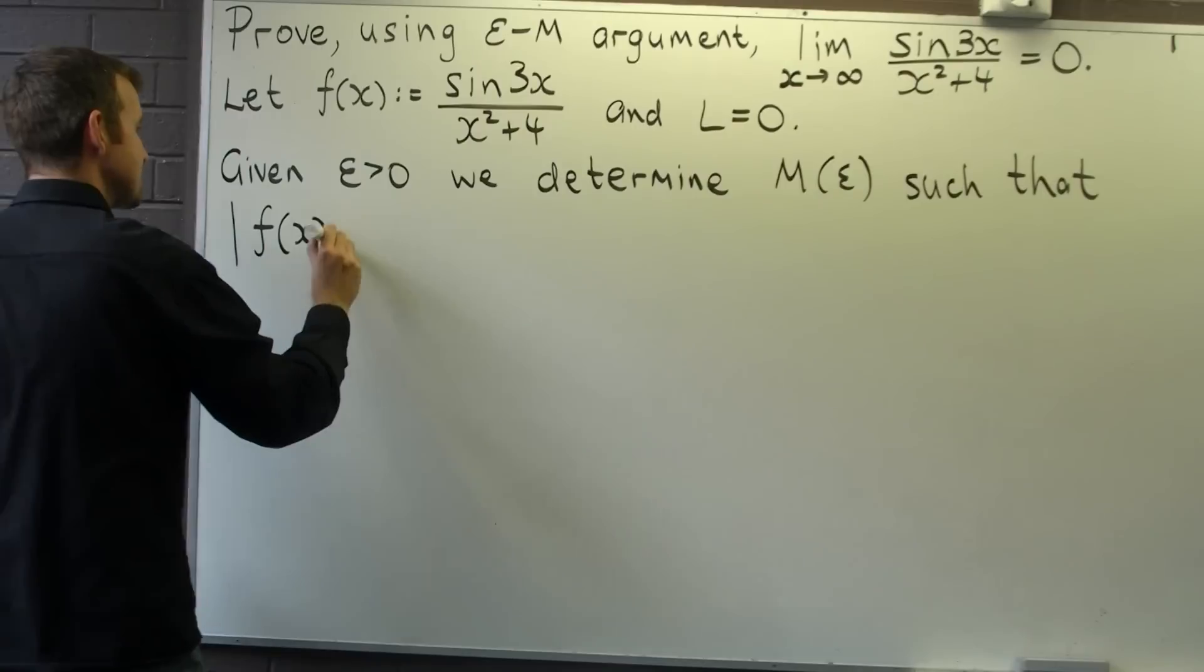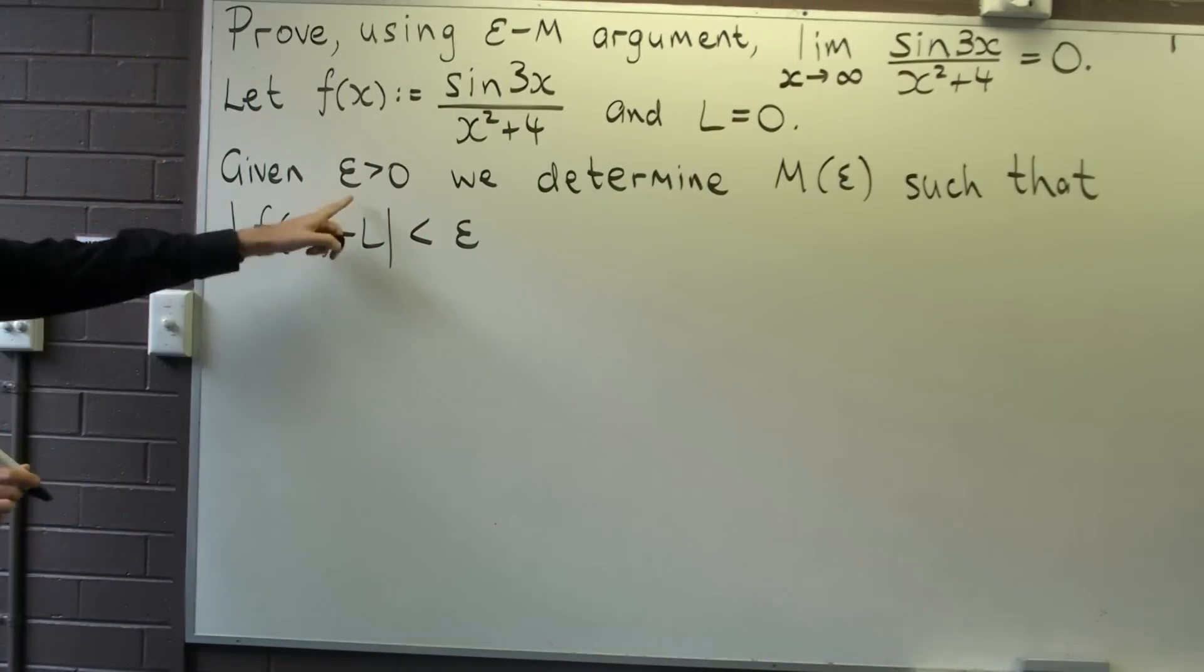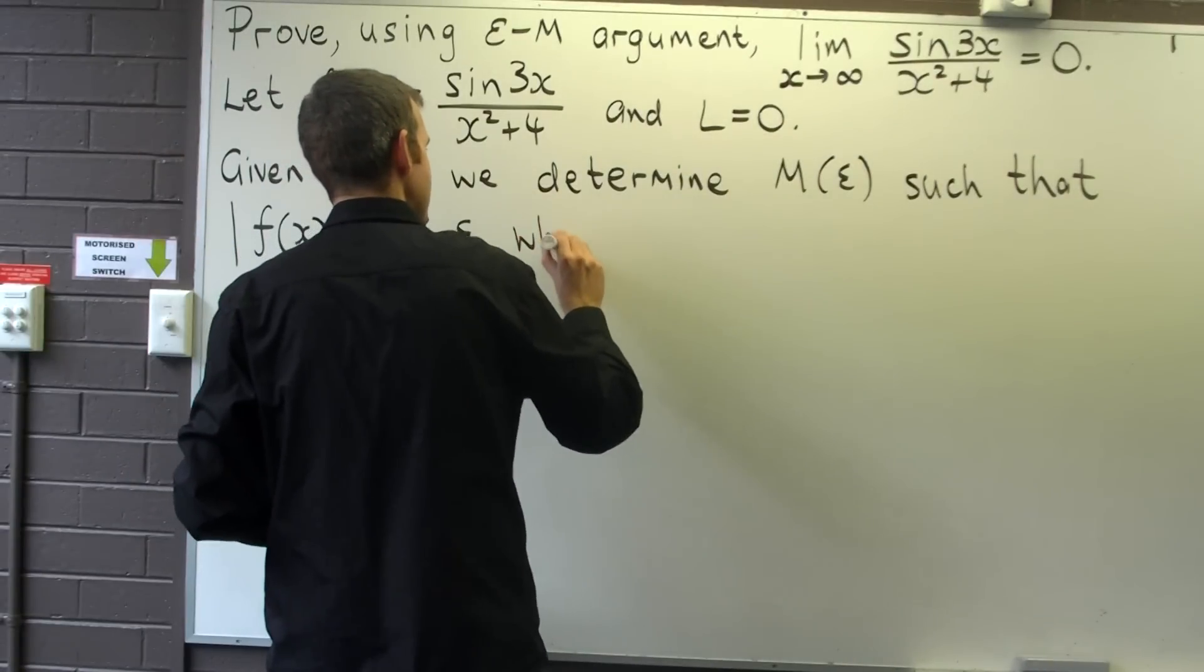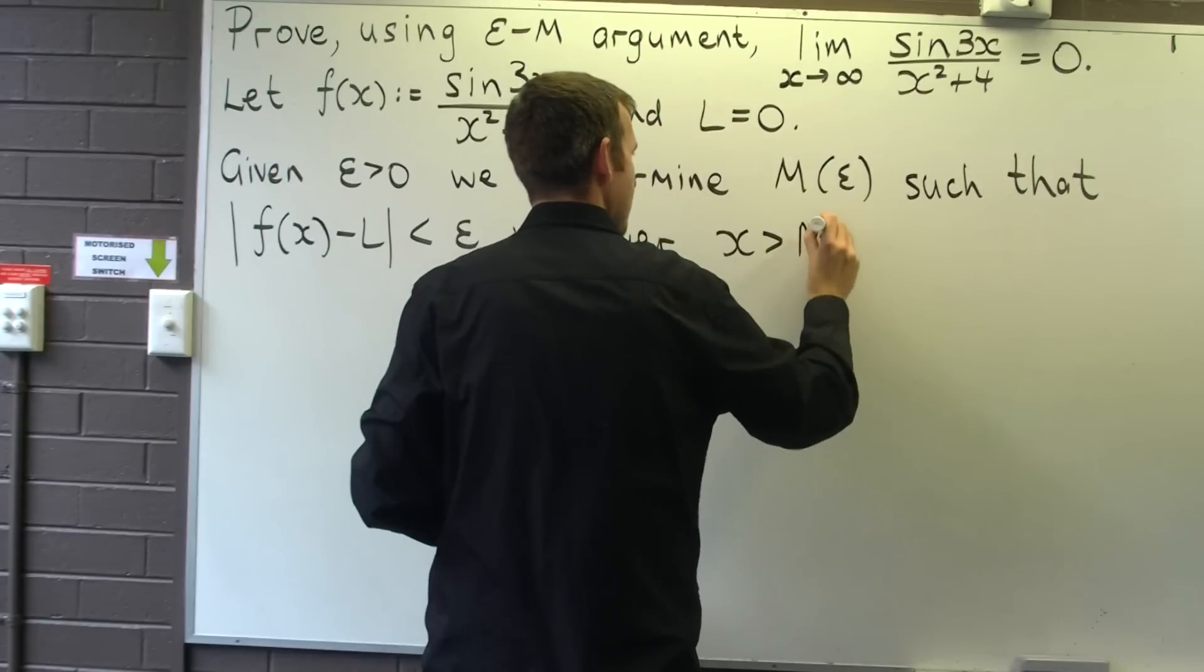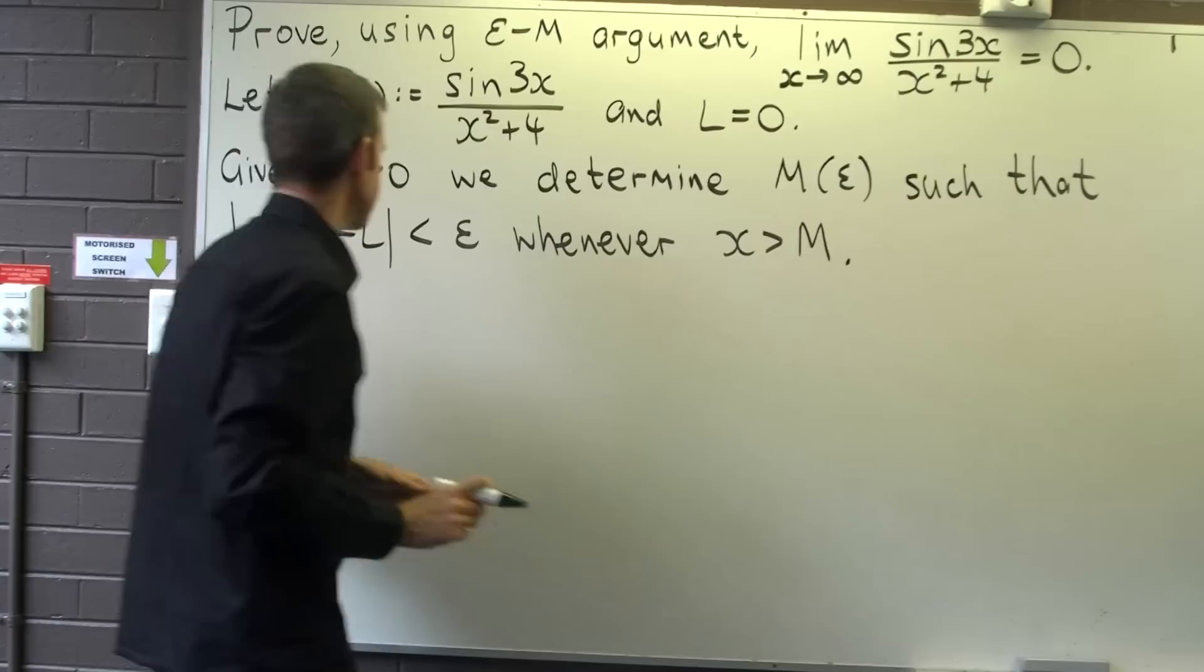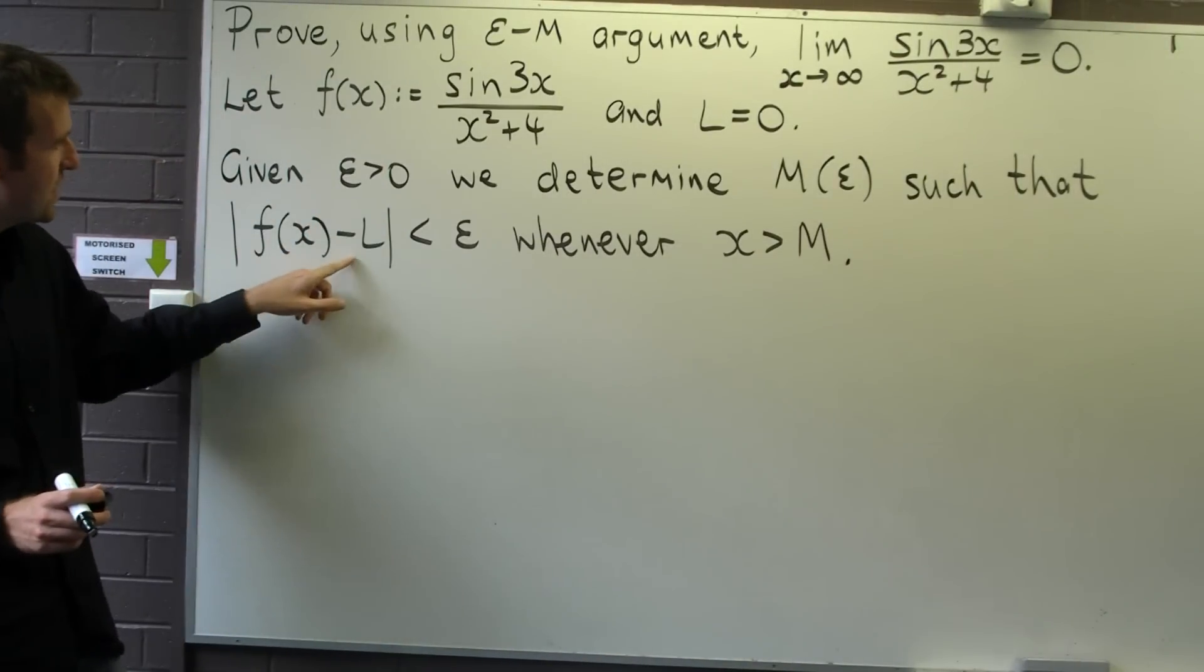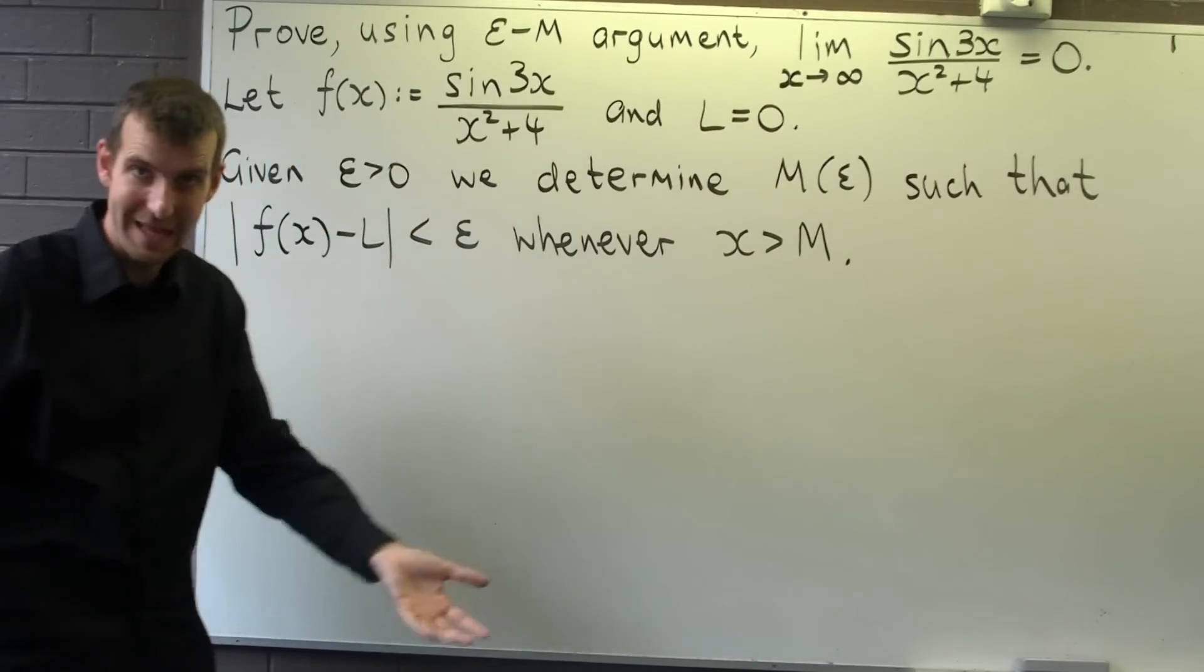|f(x) - L| can be made smaller than the given number epsilon whenever x is bigger than this M. So essentially, if epsilon is a small number, f minus its limit can be made small if x is large enough.